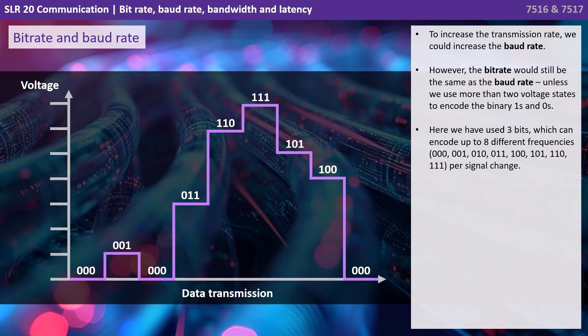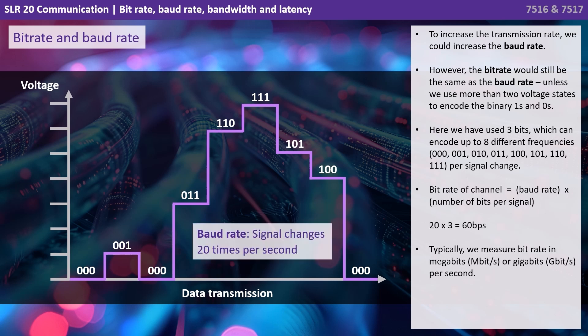To increase the transmission rate, we could increase the baud rate. However, the bit rate would still be the same as the baud rate, unless we use more than two voltage states to encode the binary ones and zeros. Here we've used three bits, which can encode up to eight different frequencies, from 000 to 111 per signal change. The bit rate of a channel equals the baud rate times the number of bits per signal. So here we have 20 times 3, which gives us 60 bits per second.